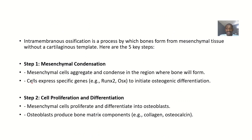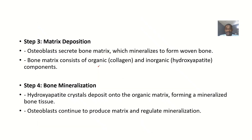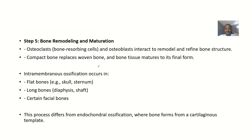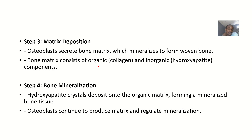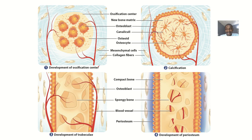Intramembranous ossification is defined as a process by which bones form from mesenchymal tissue without a cartilage template. The five steps that summarize this process are: step one, mesenchymal condensation; step two, cell proliferation and differentiation; step three, matrix deposition; step four, bone mineralization; step five, remodeling and maturation. Each step has a specific name you must know.